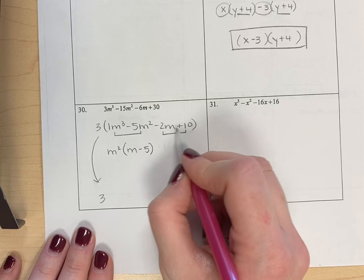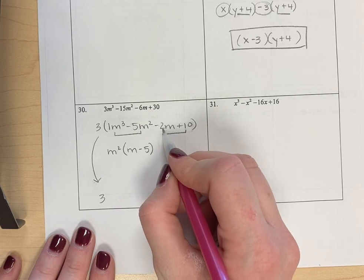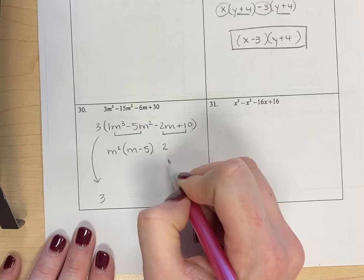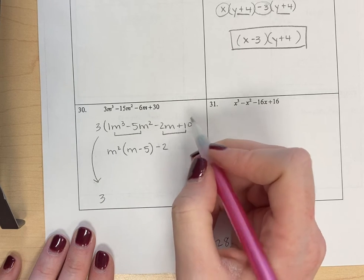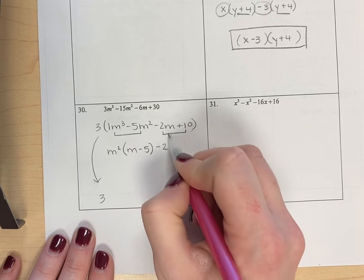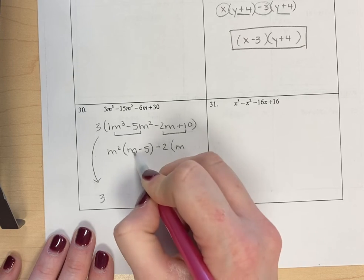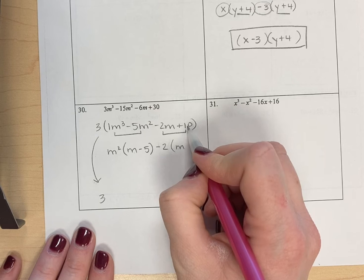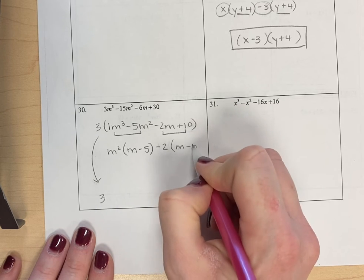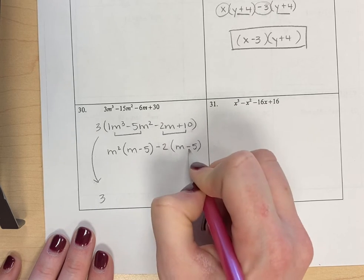Then if I look at the second pair, the largest number that goes into 2 and 10 is 2. And I'm going to make it a negative 2 because I know that when I divide here, negative 2m divided by negative 2, I want this to become a positive m to match. And I also want 10 divided by negative 2 to give me this negative 5 that I need to match this.